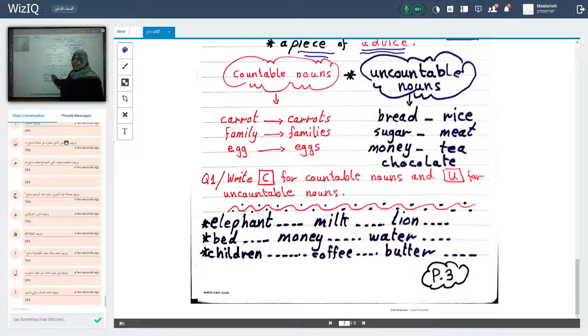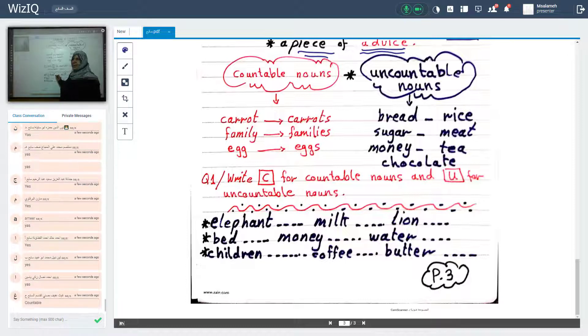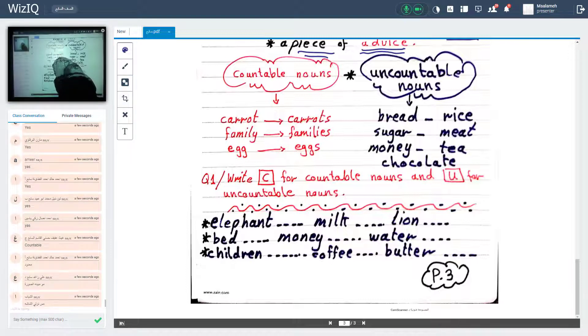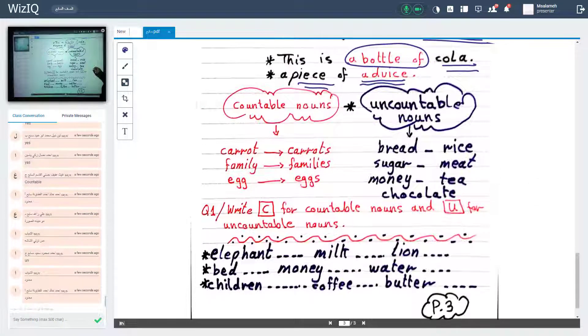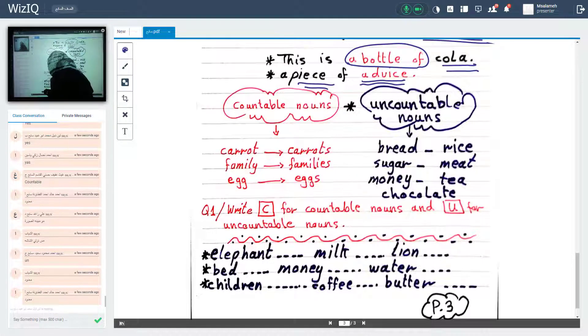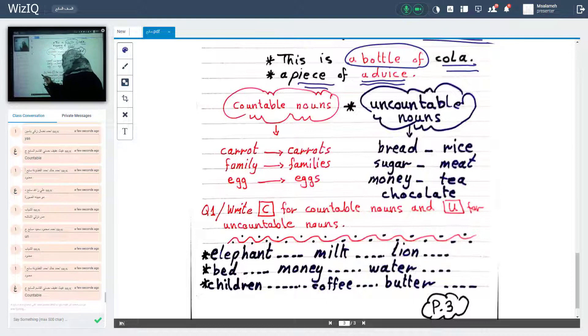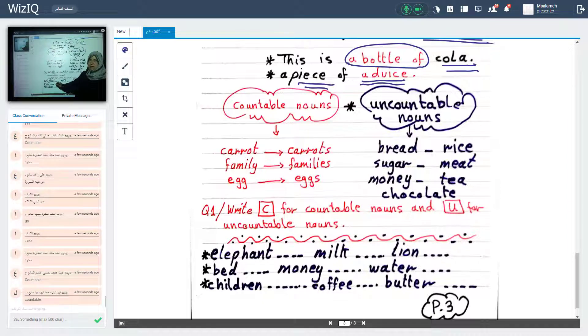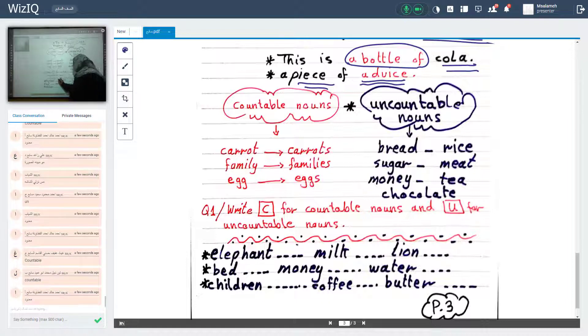Elephant. What about elephant? C or U? Countable or uncountable? Who can tell me? نزل الشاشة. Yes. Who would like to answer? في طالب كاتب an. I'm countable. No. Elephant. You know the meaning? If you don't know the meaning of the words, you can't answer. Elephant. What's the meaning of elephant? الفيل يا جماعة. Can you tell me? No one? It's countable. So I will write C. Lean. Thank you. Countable.